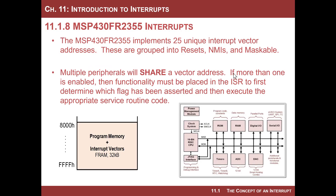We are getting very specific. It's now time to talk about exactly what we have and how we can program them. Our MCU implements 25 unique interrupt vector addresses. Remember, we said the MSP430 family has 64 different interrupt vectors, but we do not have access to all of them — we only get 25 unique vector addresses. This is important because you will see that peripherals share a vector address.